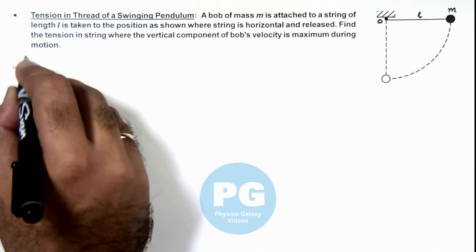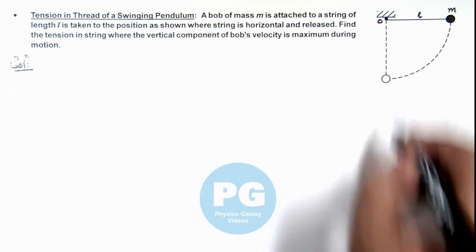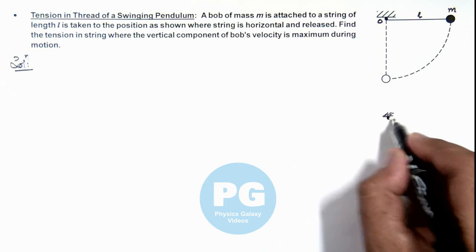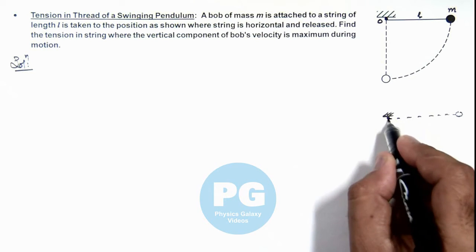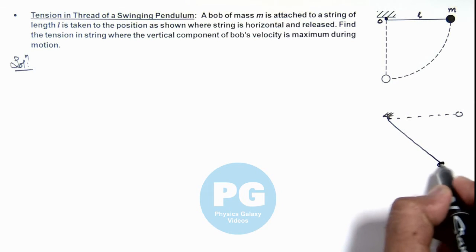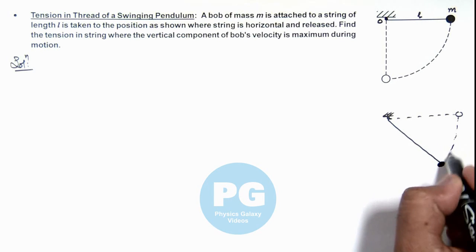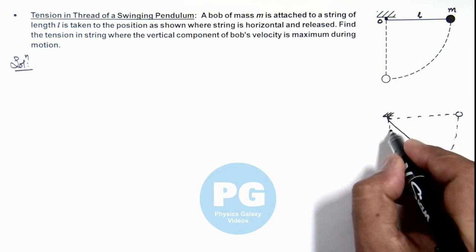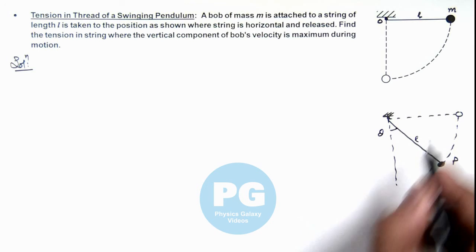First we need to find the position where the vertical component becomes maximum. We can see if the initial position of the bob was here, and in its circular motion it reaches a point P where the string is making an angle theta with vertical.